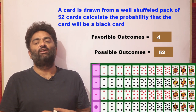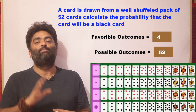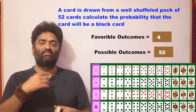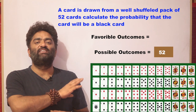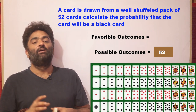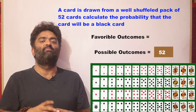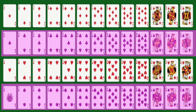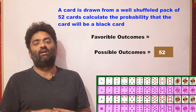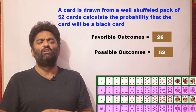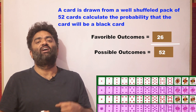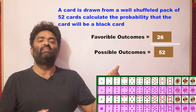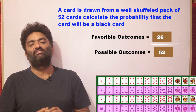If the question changes to: what is the probability that the card is going to be a black card? The denominator remains 52. In a deck there are 26 red cards and 26 black cards, so 26 are favorable. The probability of getting a black card is 26 upon 52. Similarly, the probability of getting a red card is also 26 by 52.